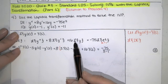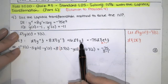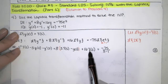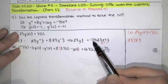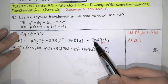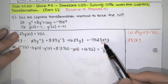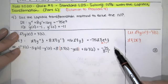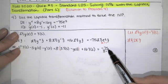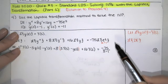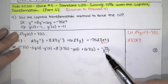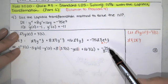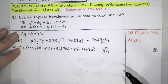Then we have 16 times the Laplace transform of y of t, which is big Y of s by definition. The Laplace transform of negative 75 times e to the at is negative 75 times one over s minus a, where a equals one, so we have negative 75 over s minus one.